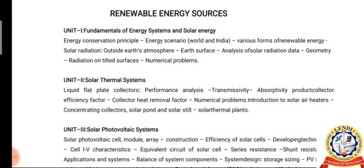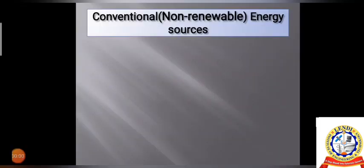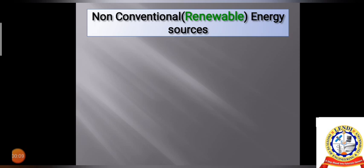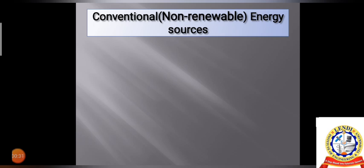The subject also deals with the analysis, storage, conservation, and potential of different non-conventional energy sources. In general, energy sources are classified into two types: conventional or non-renewable energy sources, and non-conventional or renewable energy sources. Non-renewable energy is generated or derived from fossil fuels — coal, wood, and oil. The fossil fuel deposits can be regarded as available in a fixed quantity.